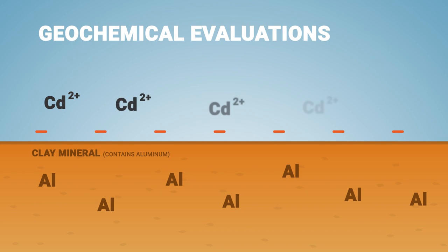Adsorption can be illustrated by considering clay minerals, which are common in soil. They all contain aluminum as a primary component, and they tend to maintain net negative surface charges. Certain trace elements, such as cadmium, lead, and zinc, are often present as divalent cations, which are positively charged. The negatively charged clay mineral surfaces attract the positively charged element species, so elements like cadmium and lead can adsorb on the clays.